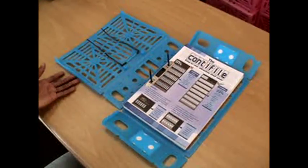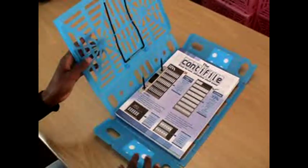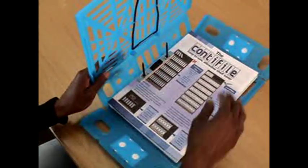Closing your Conti file now. Start by lifting up the front and the spine so that it's 90 degrees to the surface. Then clip the sides back into the spine. You'll see that these slide in quite nicely.